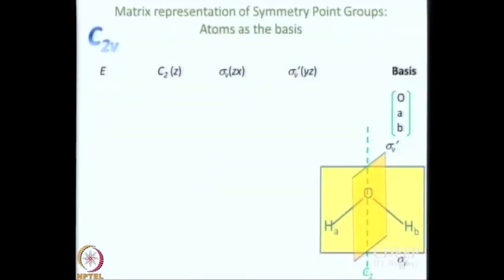Let us work with atoms. The most famous C2v molecule is water. We have talked about water. Symmetry operations are the same, but let us use the oxygen atom and hydrogen atoms as the basis. Hydrogen atoms do not really have A and B written on them, but we have to write a matrix. So if I write H and H, it will be very confusing. Let me use the labels A and B — let us pretend we can distinguish the red hydrogen atom from the blue hydrogen atom.